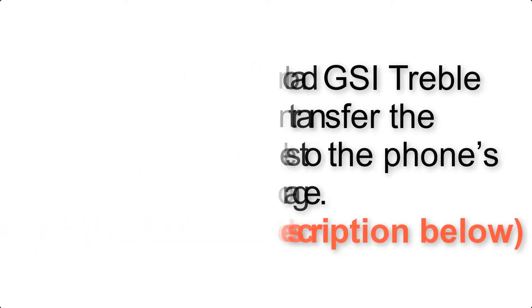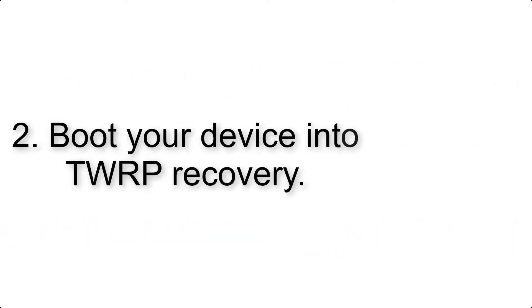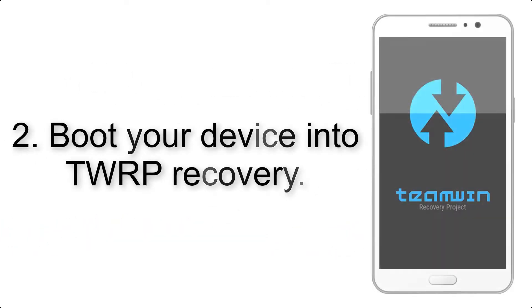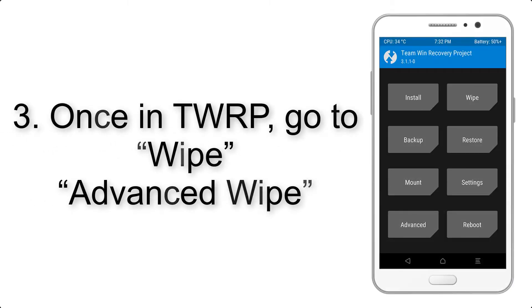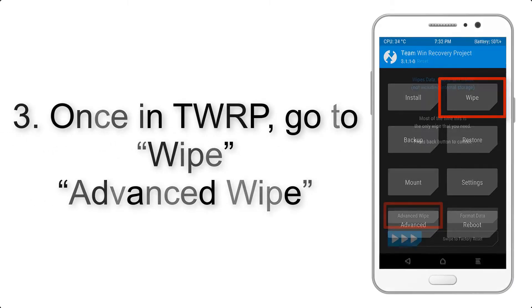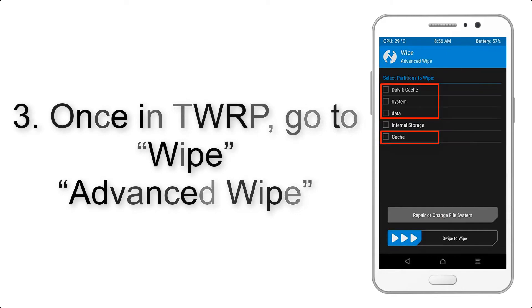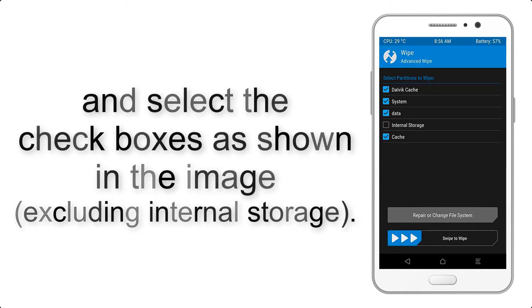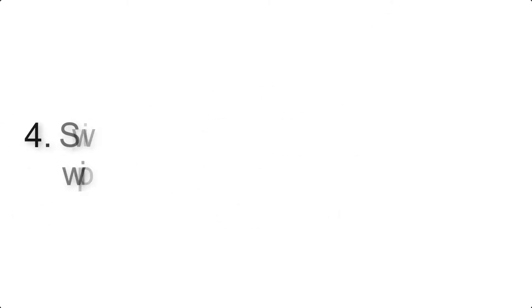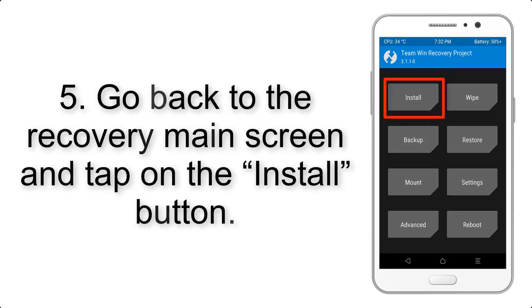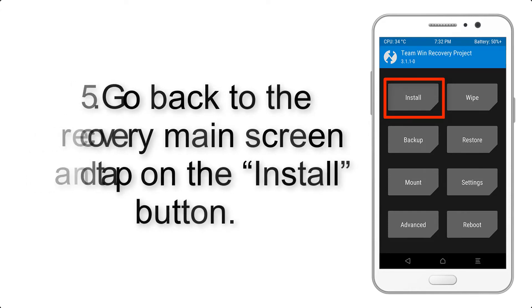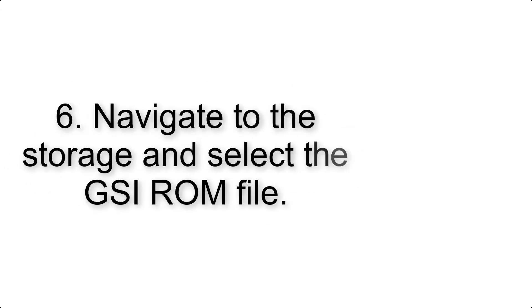Step 2: Boot your device into TWRP recovery. Once in TWRP, click on Wipe, then Advanced Wipe, and select the checkboxes as shown in the image, excluding internal storage. Step 4: Swipe the button to wipe the device. Step 5: Go back to the recovery main screen and tap on the Install button.